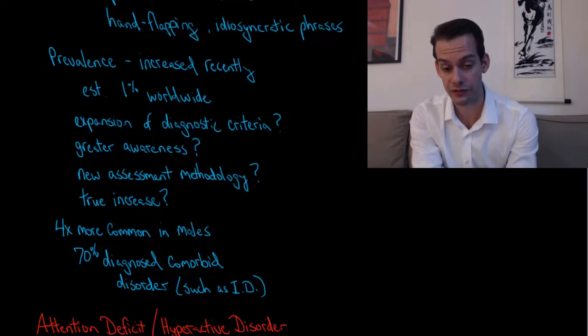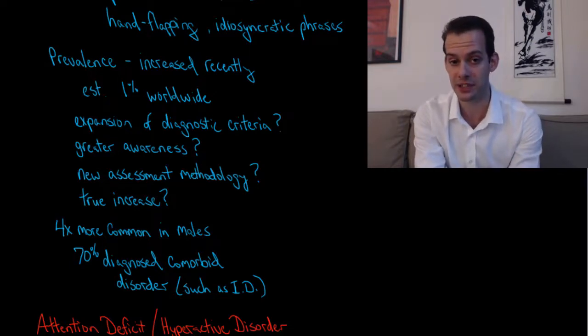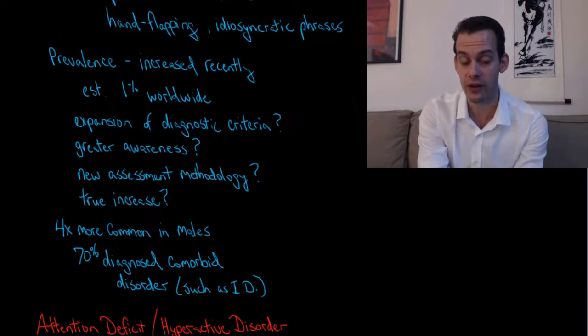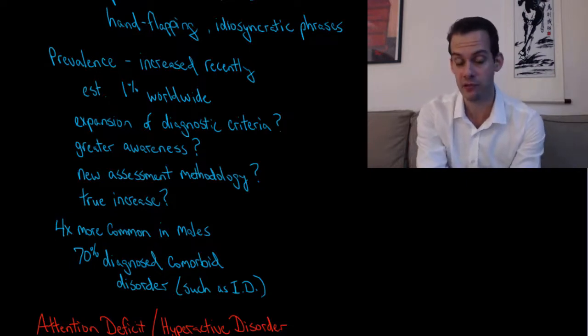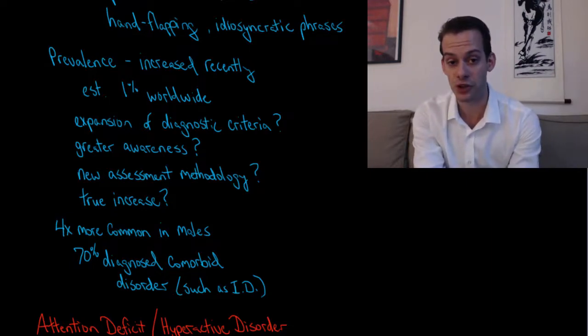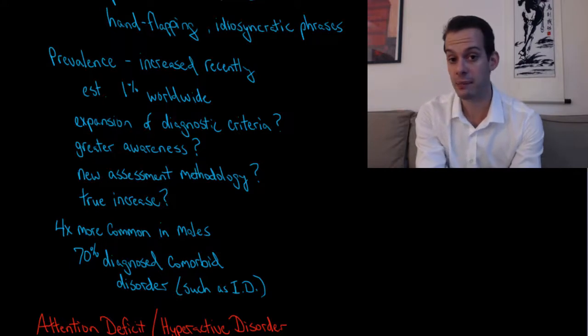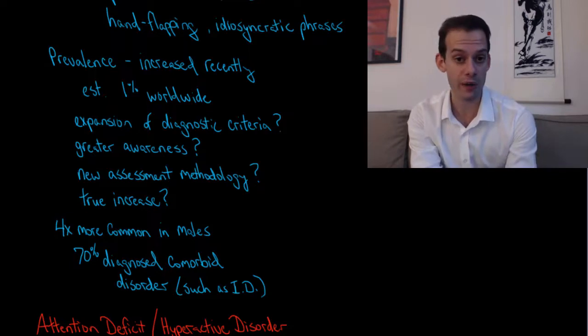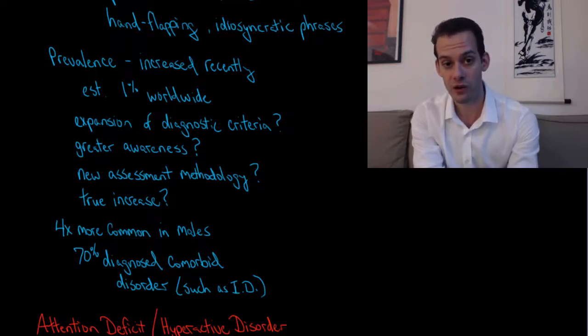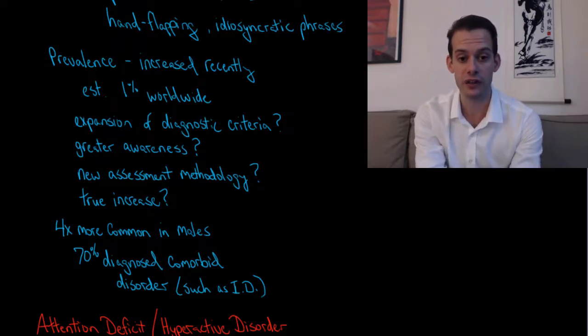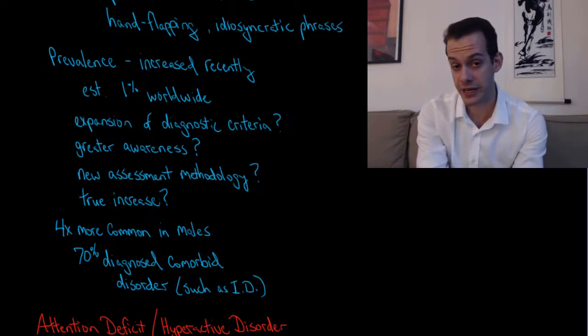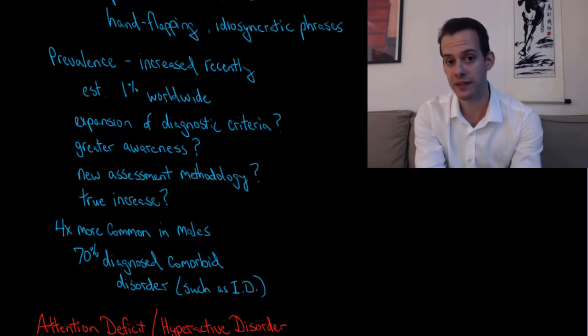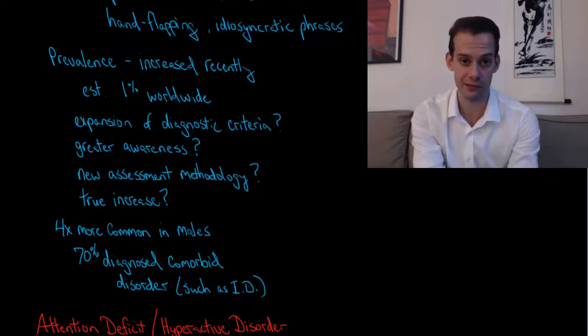One possible answer is that the diagnostic criteria have been changed, making it easier to get this diagnosis now. The expansion of these criteria might be part of the reason for this rise in prevalence. But it's also possible that there's just greater awareness of the disorder, that more parents are likely to seek out help for a child, and as a result, children who actually do need help are getting it.